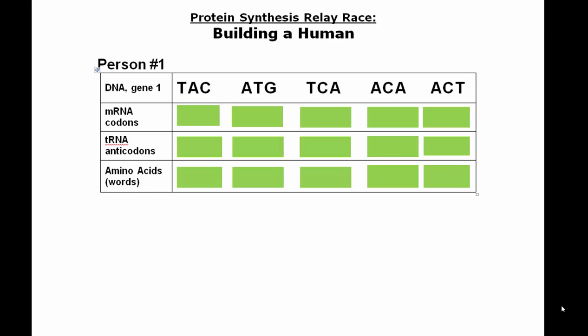The way we're going to do that is we're going to actually use a codon chart — in this case it's going to be an anticodon chart. In RNAs, remember there are no T's, so when we start with this RNA, we don't build T's. Instead of an A, we actually get a U.